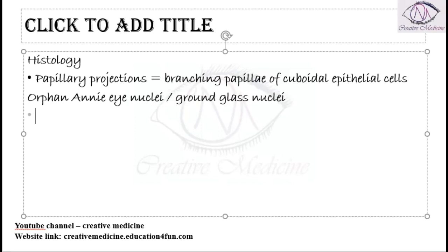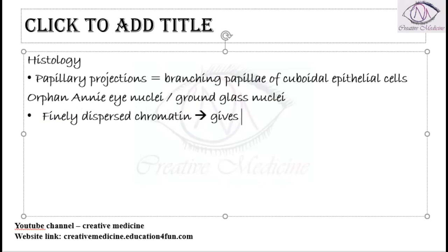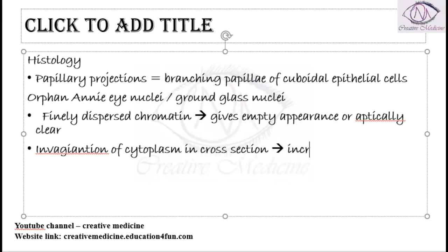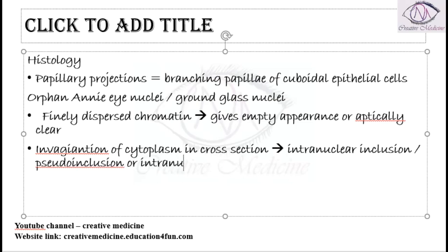What are Orphan Annie nuclei? The nucleus in Orphan Annie nuclei contains finely dispersed chromatin. Because of this finely dispersed chromatin, it gives an empty appearance, appearing optically clear. There are also invaginations of the cytoplasm seen in the Orphan Annie nuclei in cross sections, and these invaginations are called intranuclear inclusions, also called pseudo inclusions or intranuclear grooves.